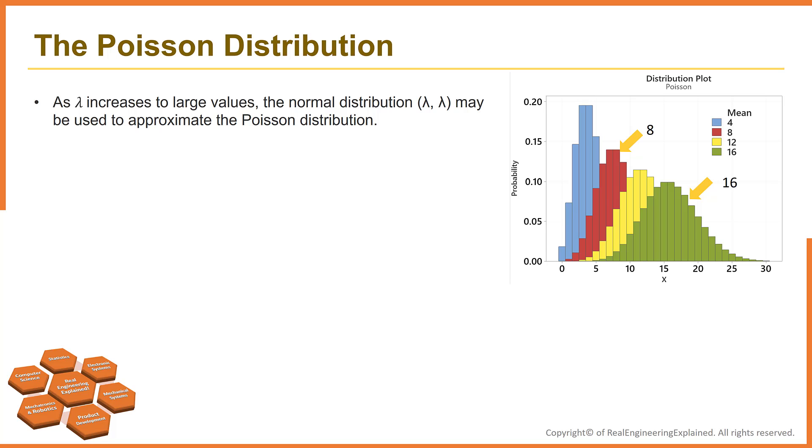As the parameter lambda becomes larger, the Poisson distribution becomes symmetric in appearance. So, for large values of lambda, we can use normal distribution with the mean lambda, and variance lambda to approximate the Poisson distribution.